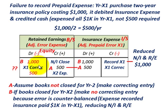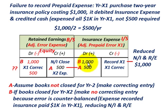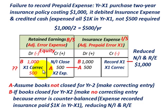You have to use reverse logic here — look at your timing and how you're going to make your adjustments through your expense items and retained earnings so you come up with the correct retained earnings balance. That summarizes our topic on counterbalancing errors.